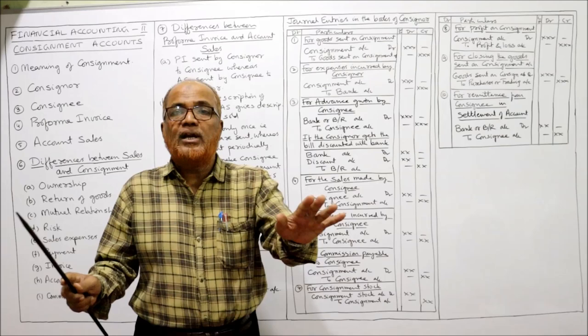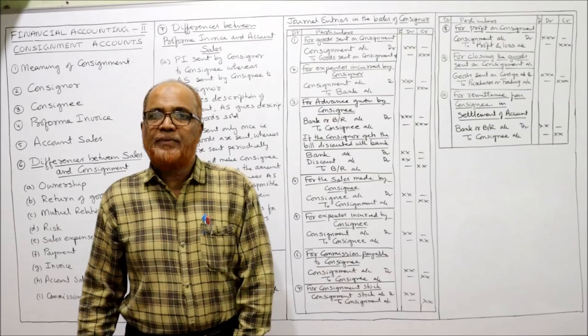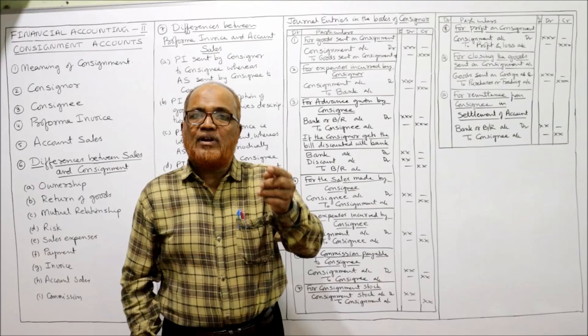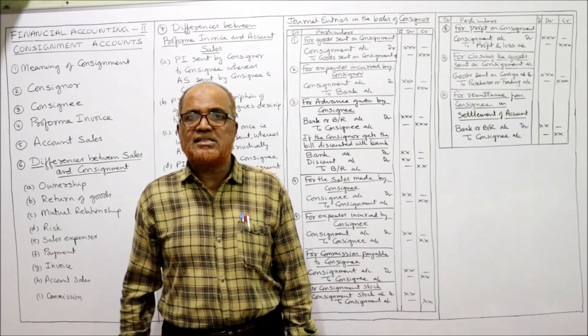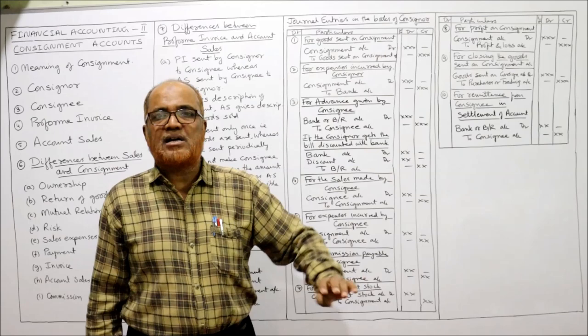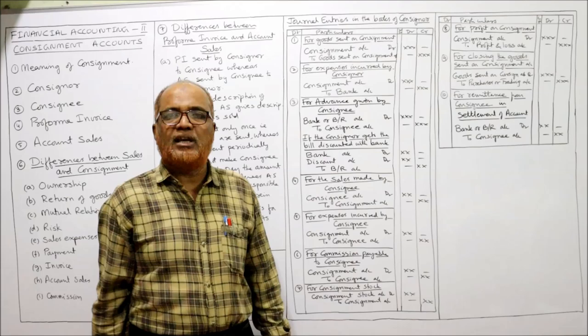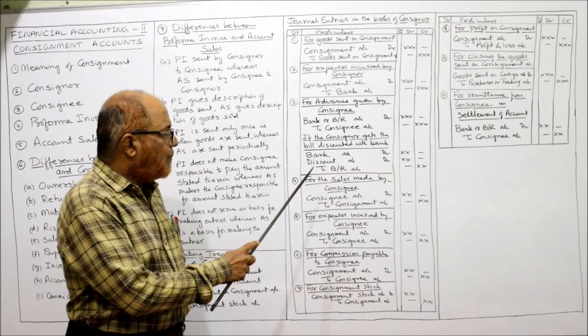If the Consigner gets the bill discounted with the bank: suppose A received a 50,000 rupees bill from the Consignee and takes it to the banker for discounting; the banker pays 49,000 immediately and charges 1,000 as discount. The entry is: Bank Account Dr., Discount Account Dr. to Bills Receivable Account. These entries for advance and bill discounting are only passed if such transactions exist in the problem.